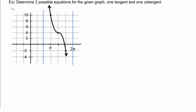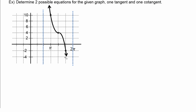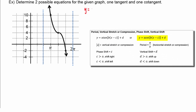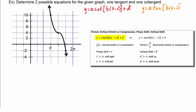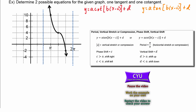In this next example, we have to determine two possible equations for the given graph — one tangent and one cotangent. Because this is a decreasing function, it looks most like a cotangent, so we'll start with that: y equals a times cotangent of (bx minus c) plus d. Then we'll find the tangent function: y equals a tangent of (bx minus c) plus d. Go ahead and try this on your own, then restart the video when you're ready to check your answers.